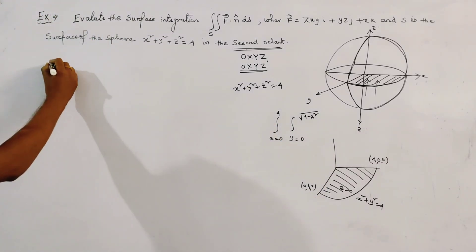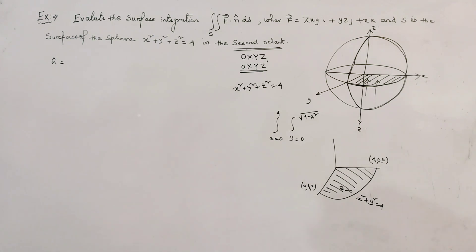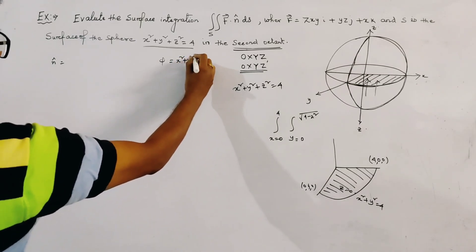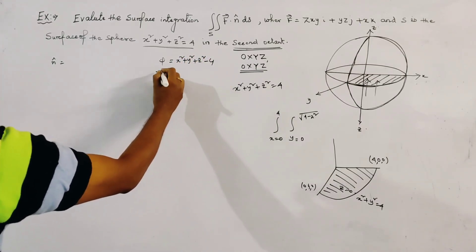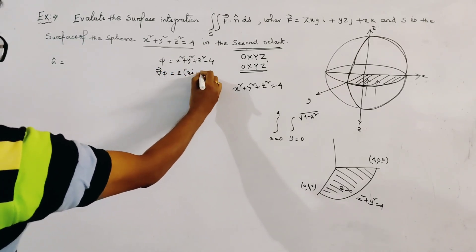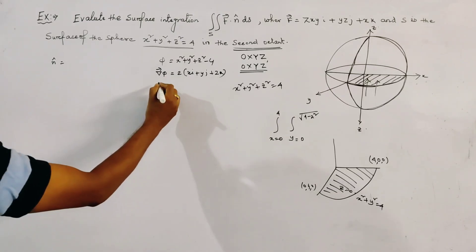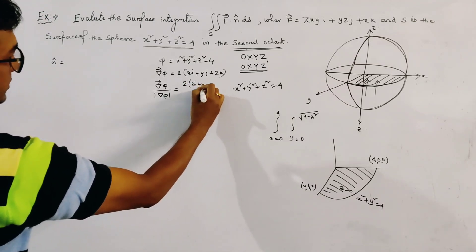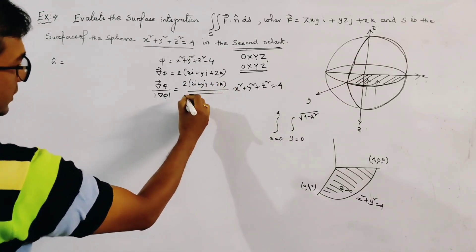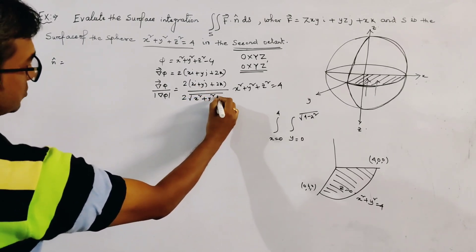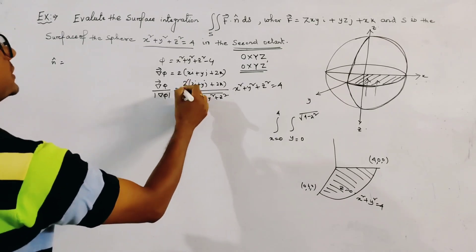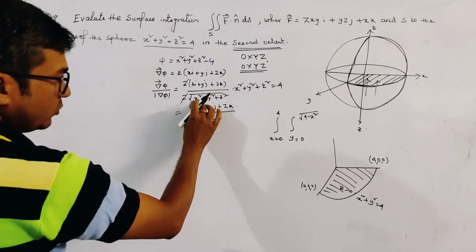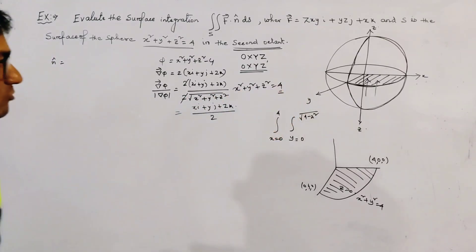Now we compute the unit normal N. The surface is given by φ = x² + y² + z² − 4, so grad φ = (2x, 2y, 2z). Since x² + y² + z² = 4 on the surface, the magnitude of grad φ is 4, giving unit normal N = (1/2)(x i + y j + z k).